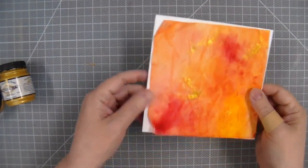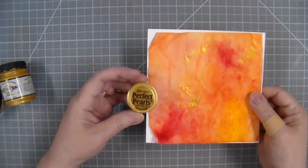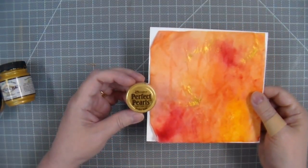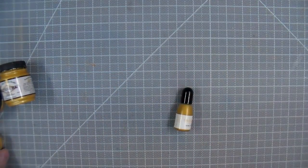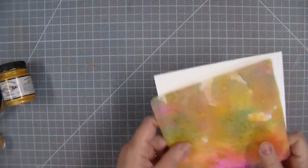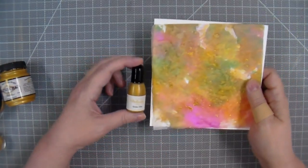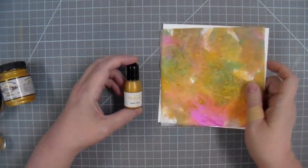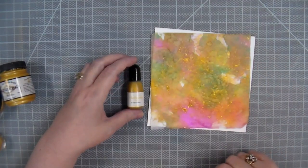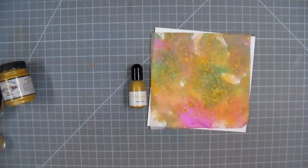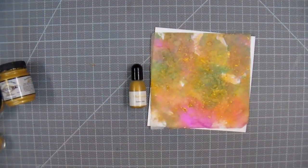This one uses Perfect Pearls. And the last one uses Delicata Gold Re-Inker. So as I said, you can use anything that you have in your studio that's a metallic to add some shimmer on top of your beautiful watercolored backgrounds.